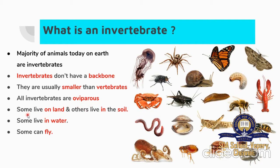Oviparous means animals which lay eggs. Some live on land and others live in the soil. Some live in water and some can fly. These are some examples of Invertebrates.